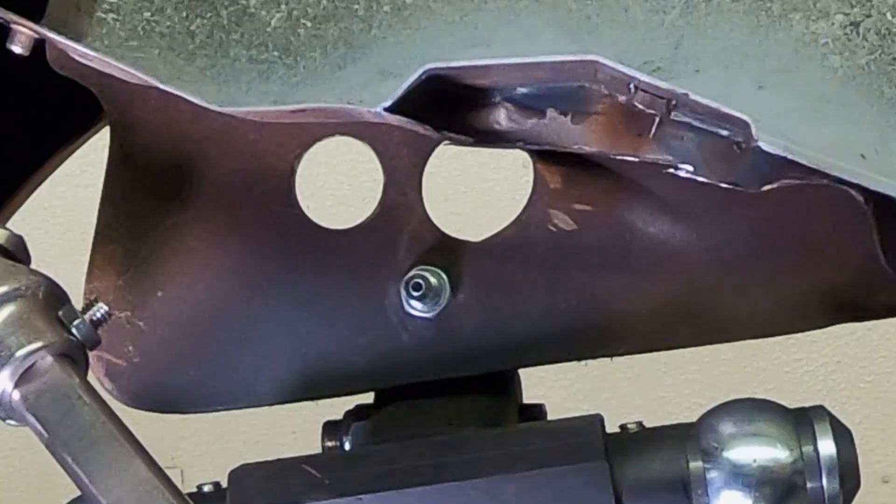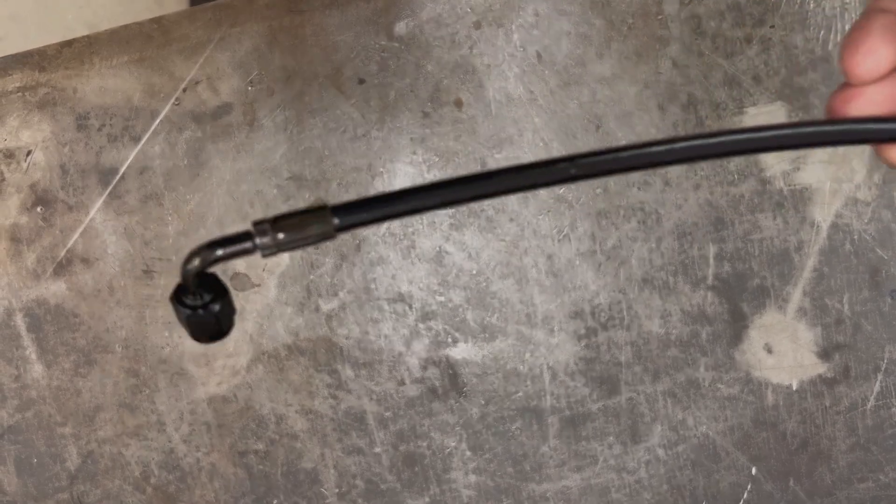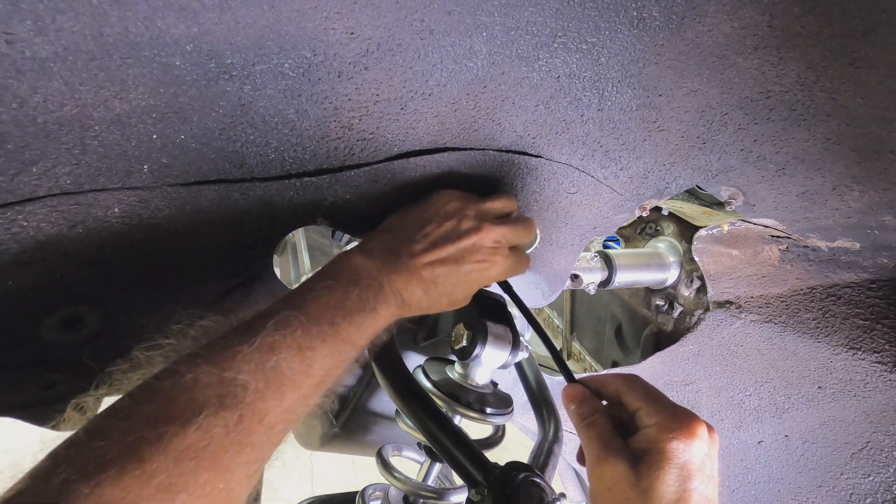This is the end point bulkhead fitting. As far as making the flex line to the wheel, that's easy. Just order them pre-made. Make sure to get the plastic coated ones because they look rad.